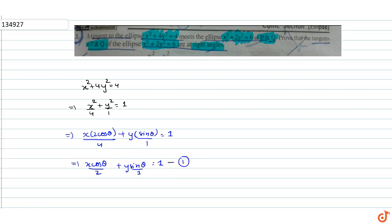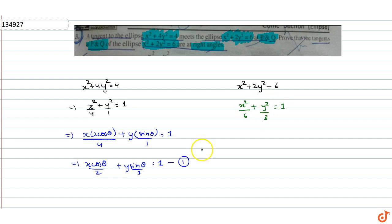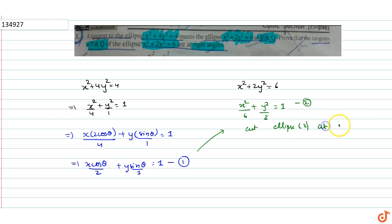This is equation number 1. The second ellipse given is x² + 2y² = 6, which becomes x²/6 + y²/3 = 1. We suppose that equation number 1, the tangent, cuts this second ellipse at point (h, k).